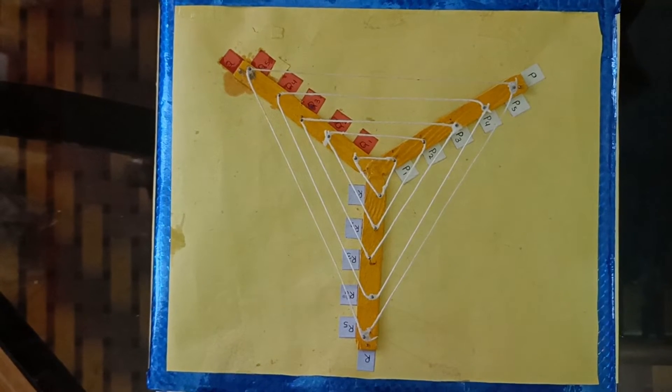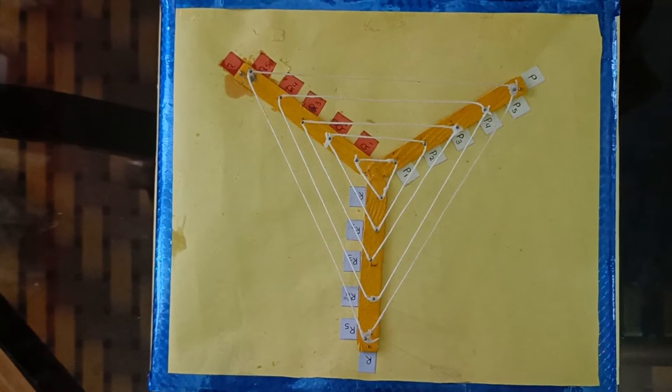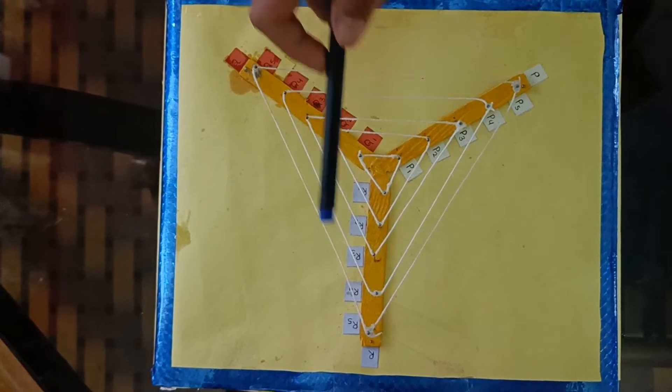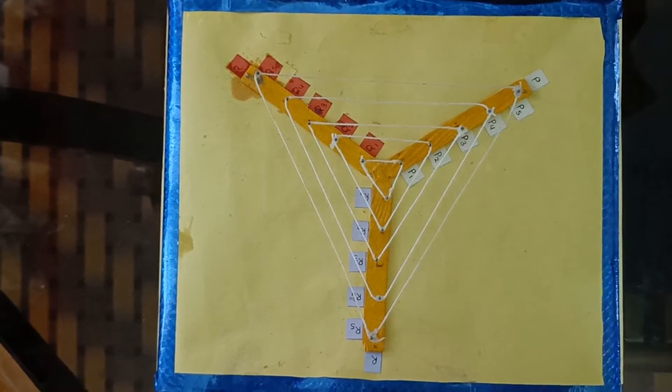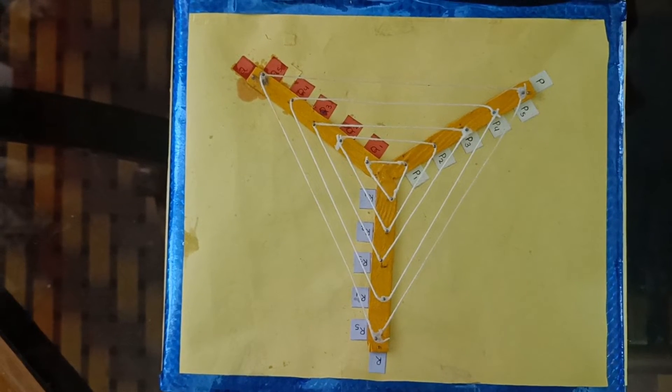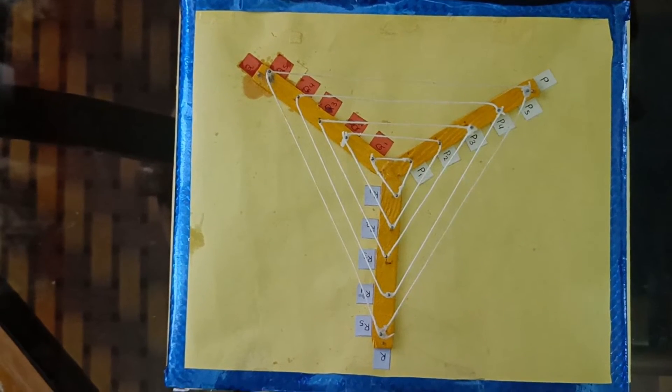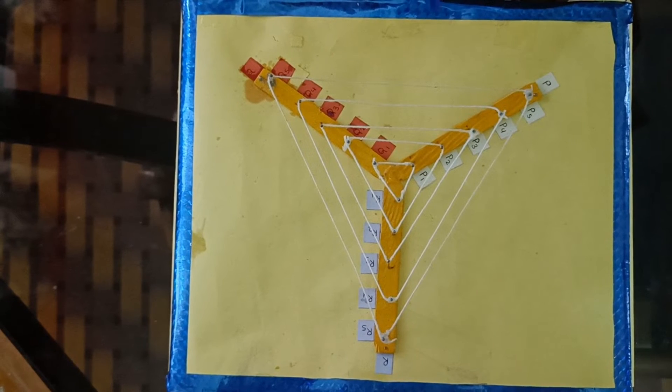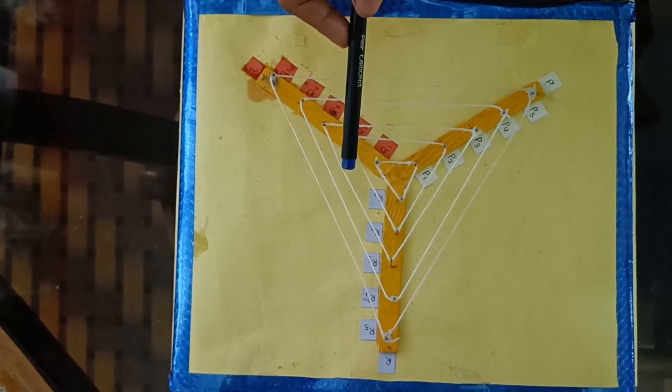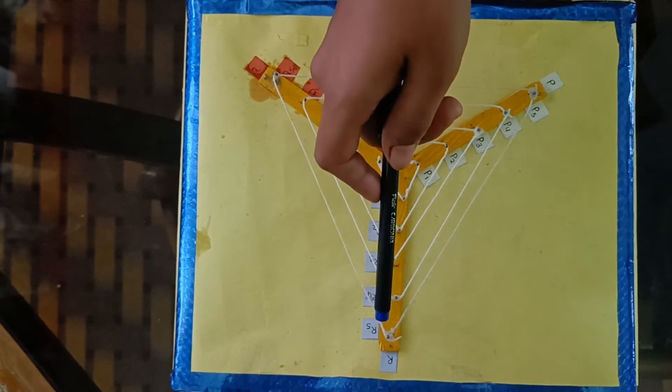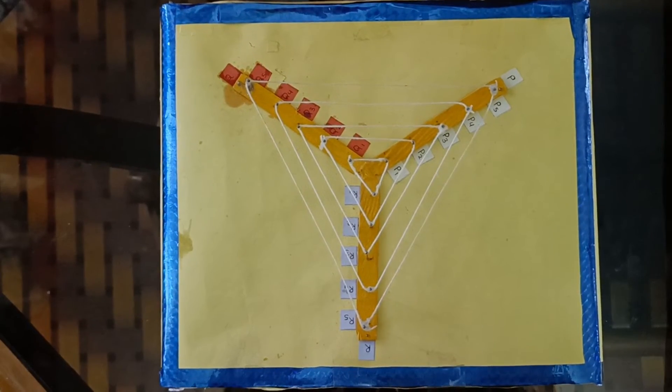Now here you can see that we have wound the thread around the nails of subscript P1, Q1, R1 on three respective strips. Similarly, wind the thread around the nails to get a triangle. Now we can see that it forms triangles P1R1Q1, P2R2Q2, up to P5R5Q5.